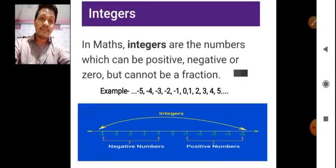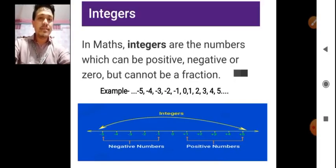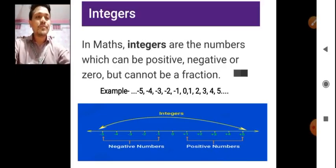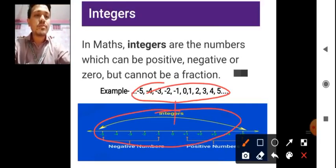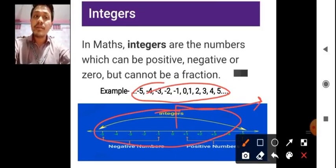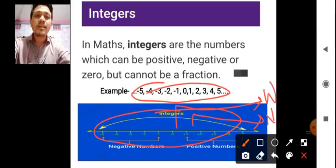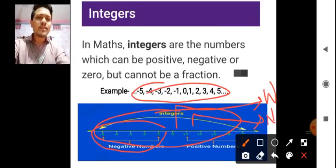Next topic, which I have also discussed in the special class, is integers. Integers are the numbers which can be positive numbers, which can be negative numbers, and which can be 0 also. But it cannot be a fraction. So for example, minus 5, 4 — these are all integers. From 0 onwards on the number line will be considered as a whole number, but from positive 1 we consider it as a natural number. And if you have a negative number, we cannot give it the name of natural or whole number — we will consider that as an integer.